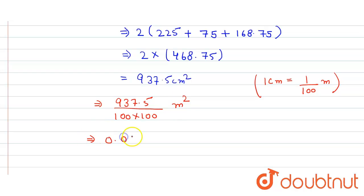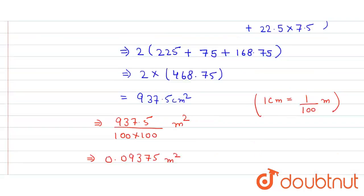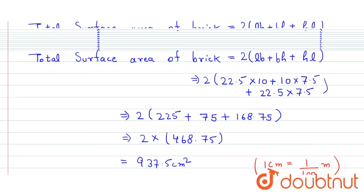Now we find the required number of bricks. The required number of bricks will be equal to 9.375 divided by 0.09375.